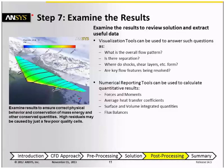Once the solution has been calculated, it's possible to examine the results and extract data, and this is called post-processing. Post-processing has two different categories. One is solution visualization, where we use contour or vector or streamline plots to see what the flow looks like, and we can see things like whether there's flow separation, where shocks or shear layers or other flow features form, and whether or not key flow features are being resolved.